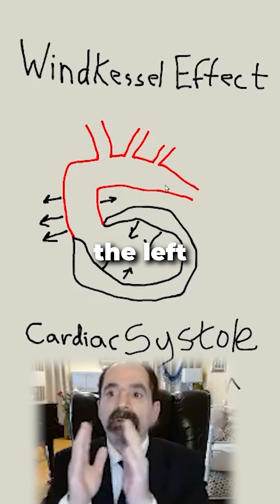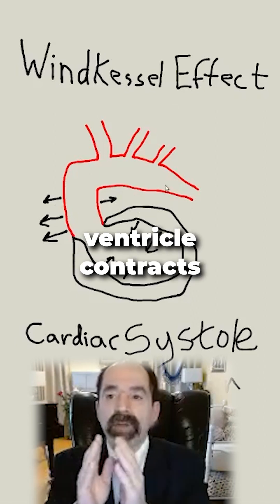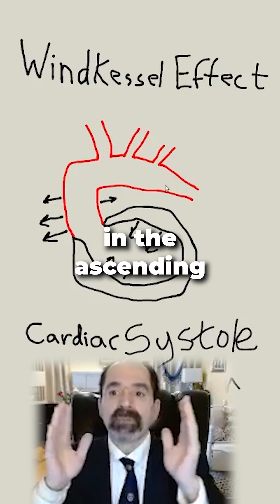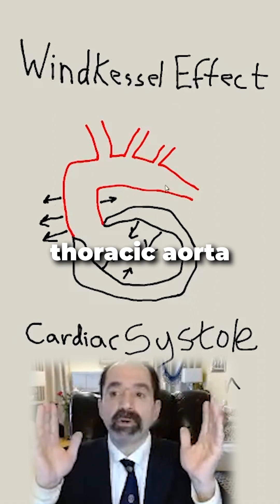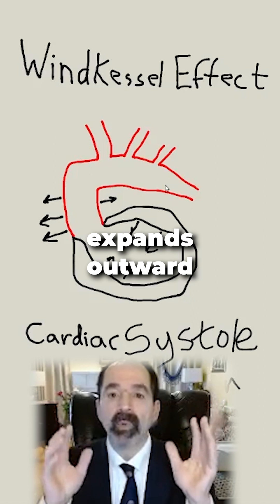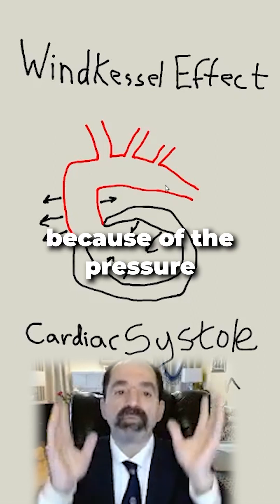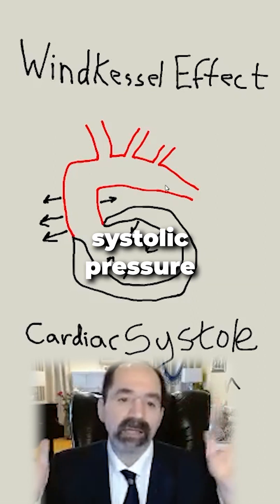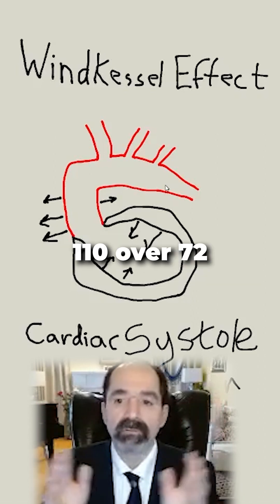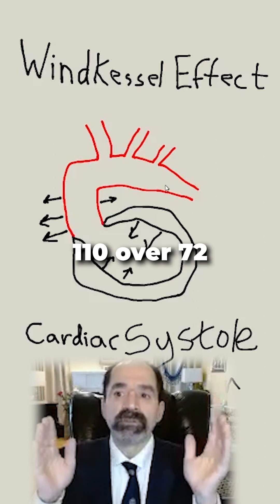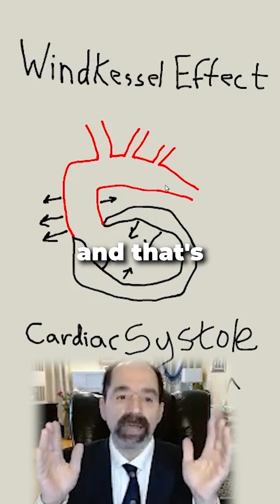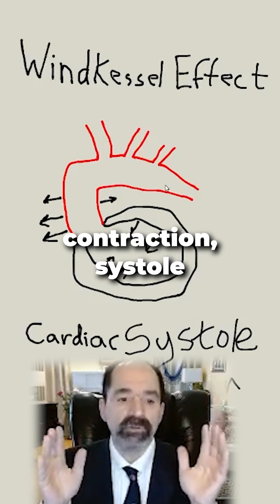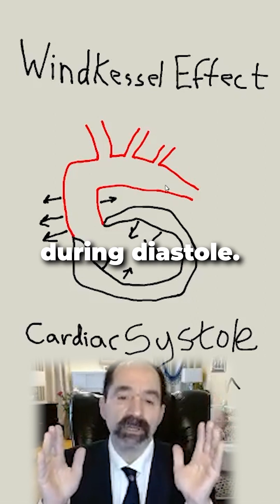When the left ventricle contracts, the ascending thoracic aorta expands outward because of the pressure of the contraction. Let's say it's a systolic pressure of 110 over 70 — it distends outward, and that's during cardiac contraction, systole.